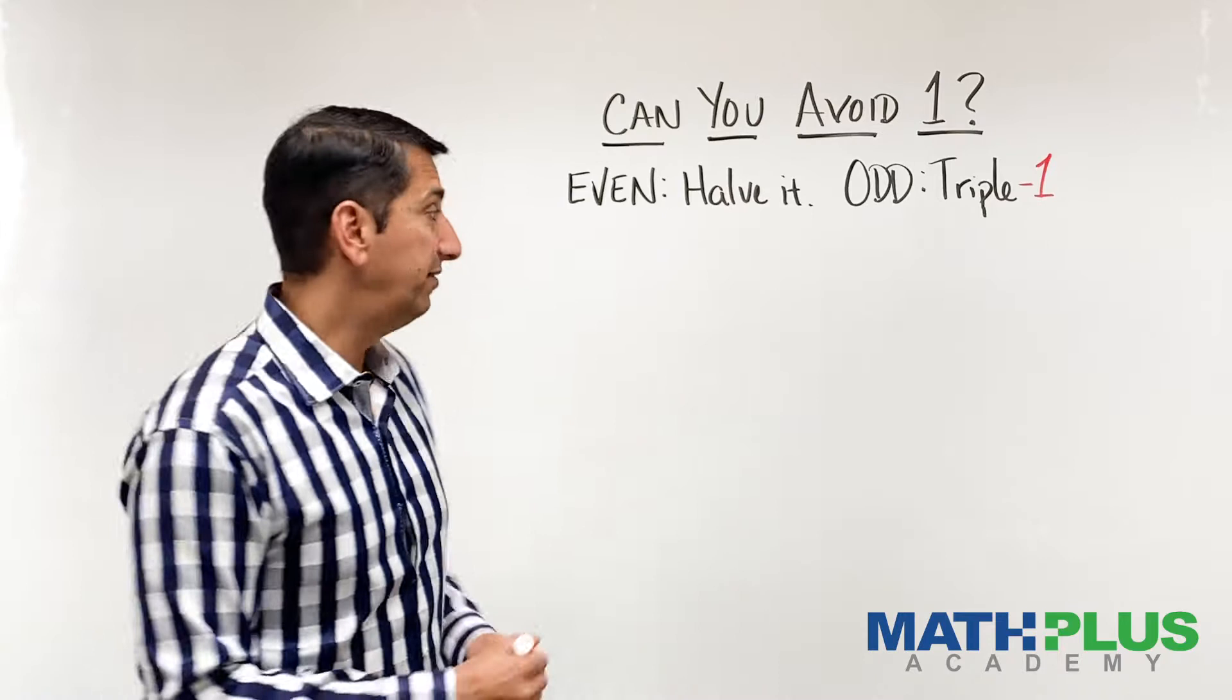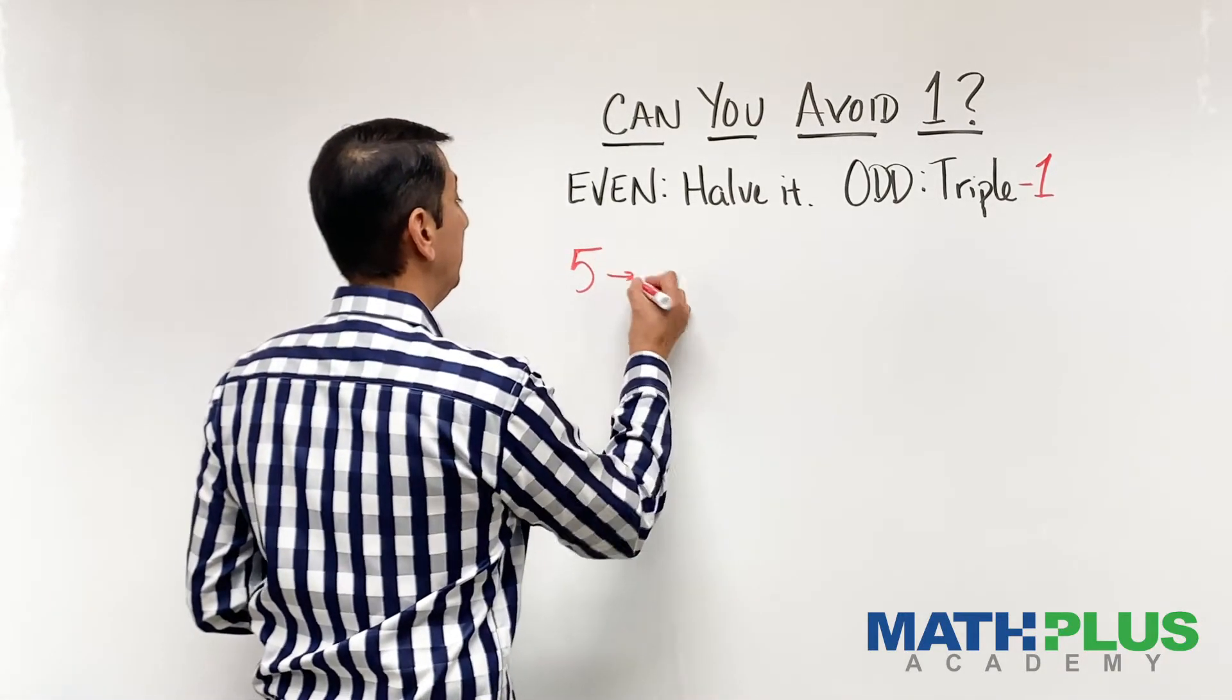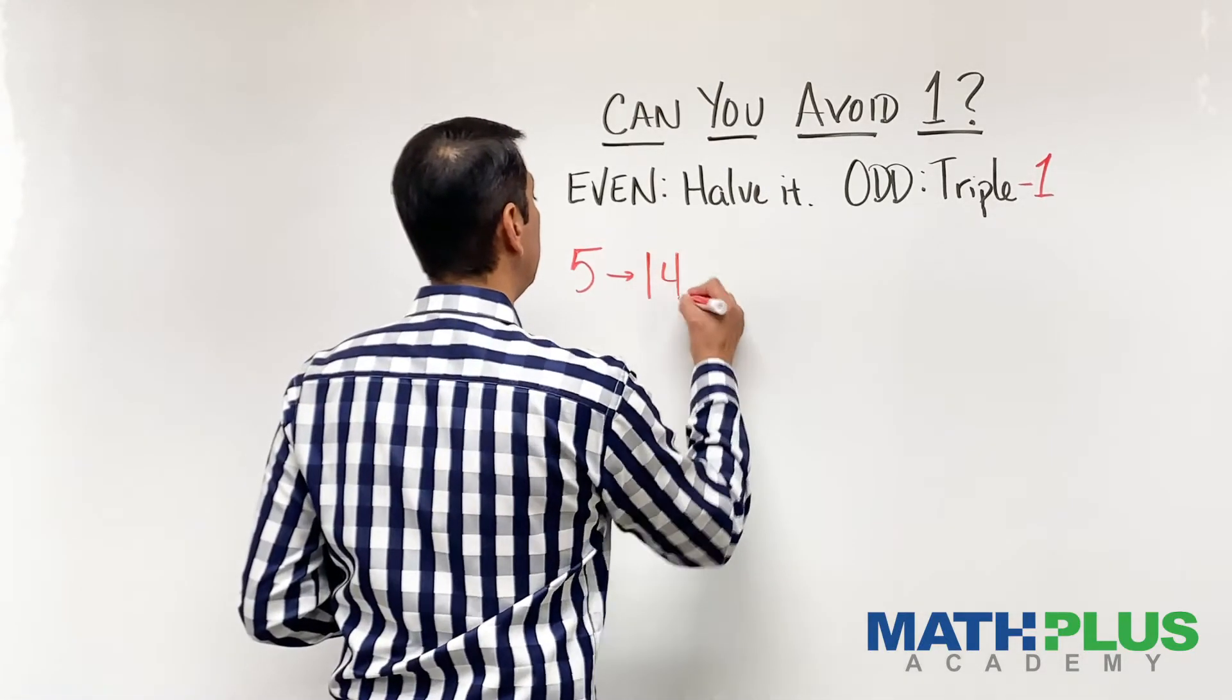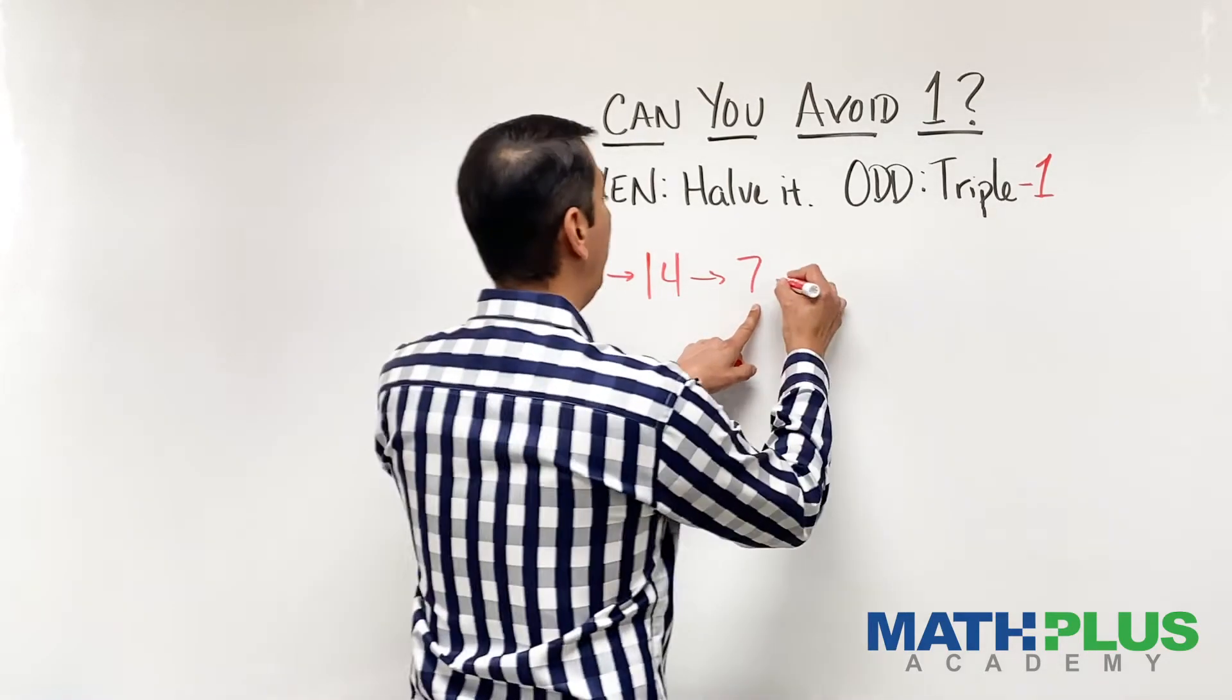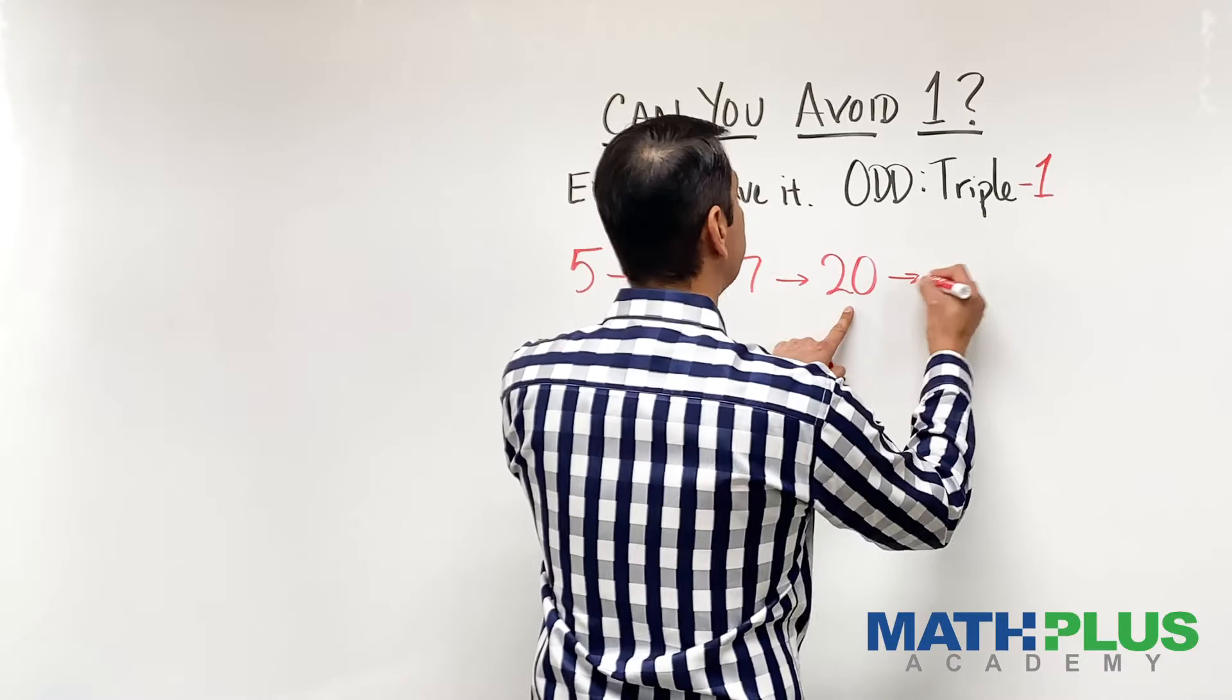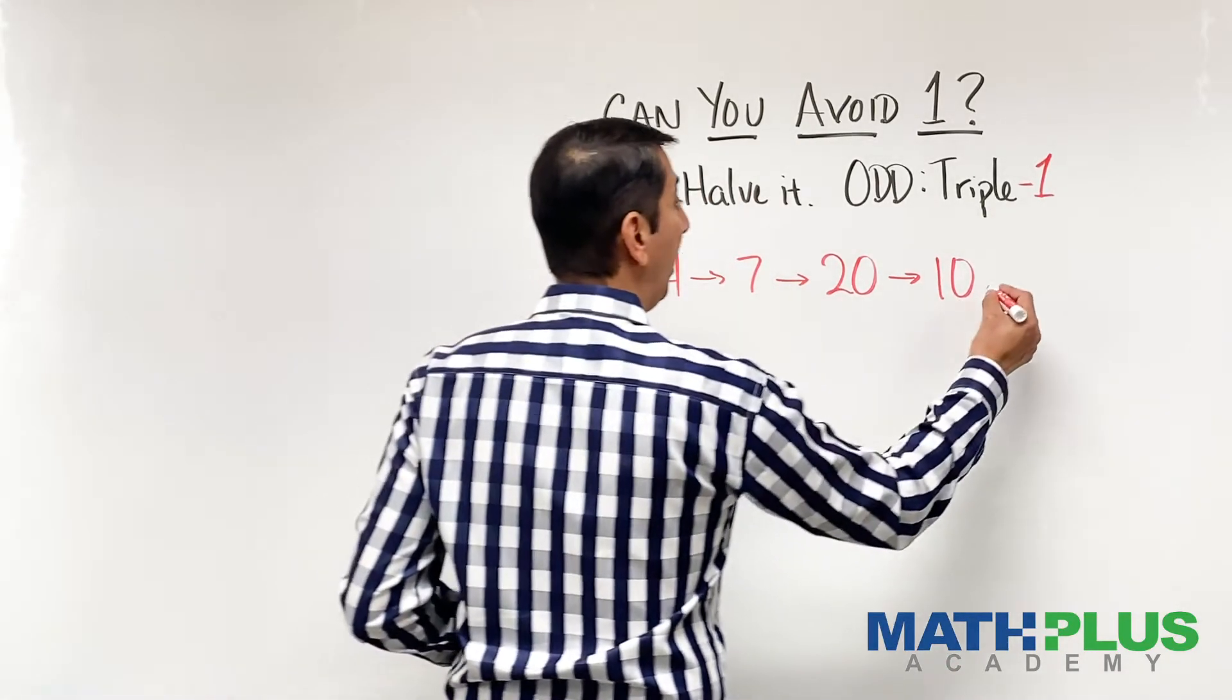So now let me start with five again. Now when I triple it and subtract one, I get 14. 14 is even, so that becomes seven. Seven is odd, so I triple and subtract one. That's 20. 20 is even, which gives me 10. 10 is even, which gives me five.